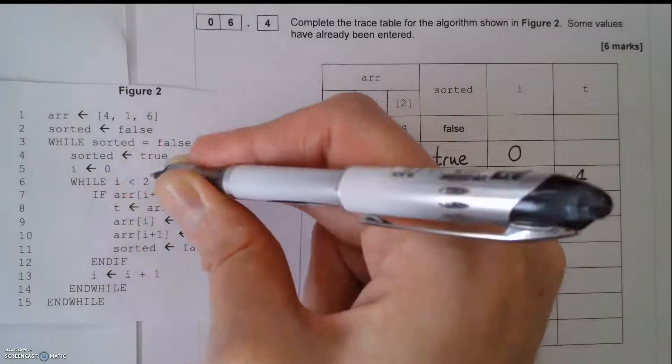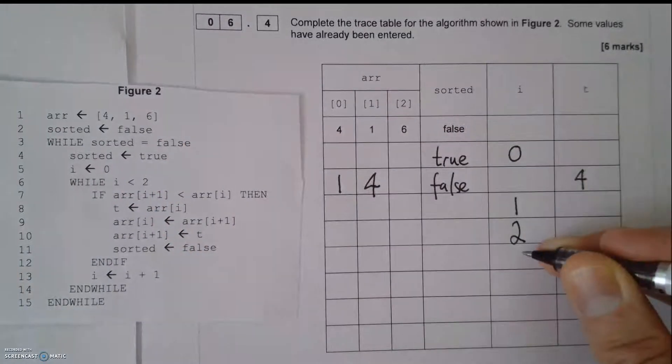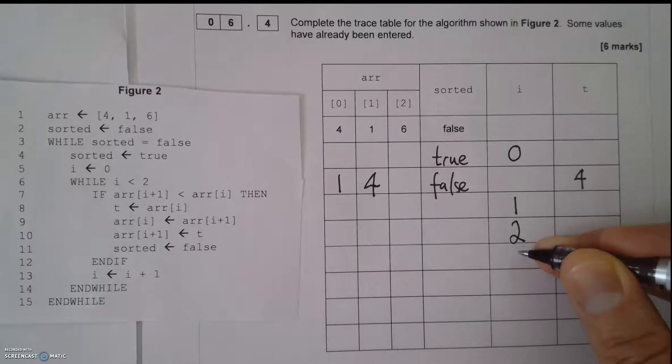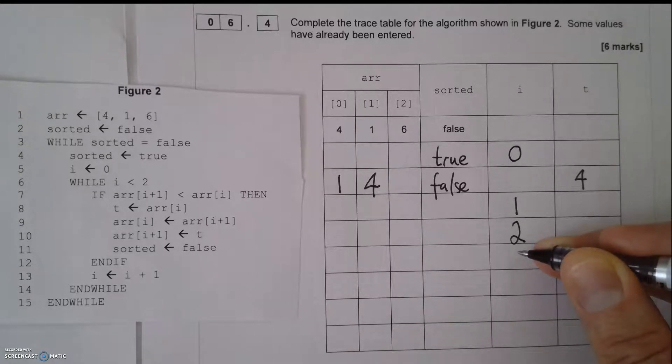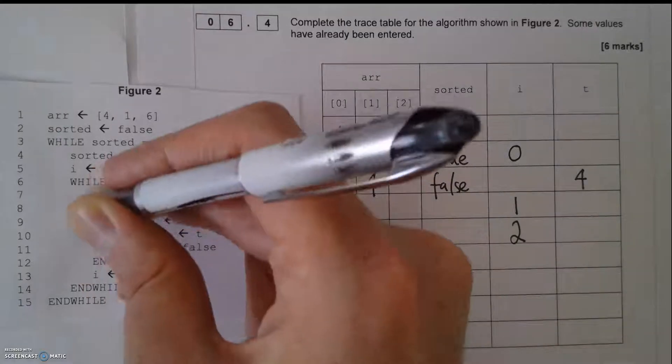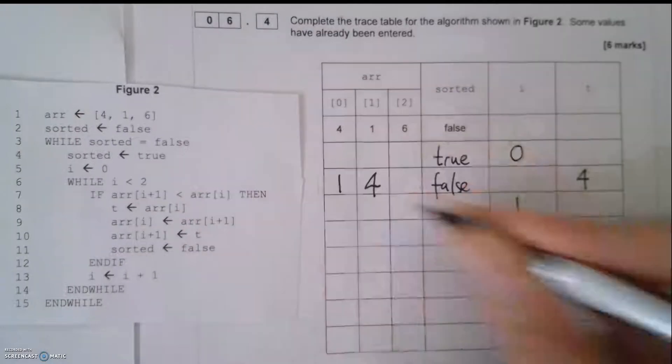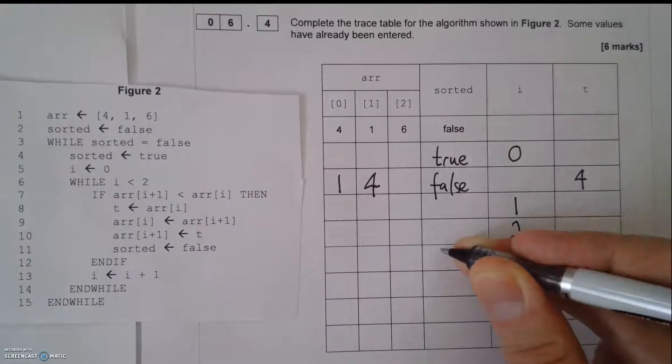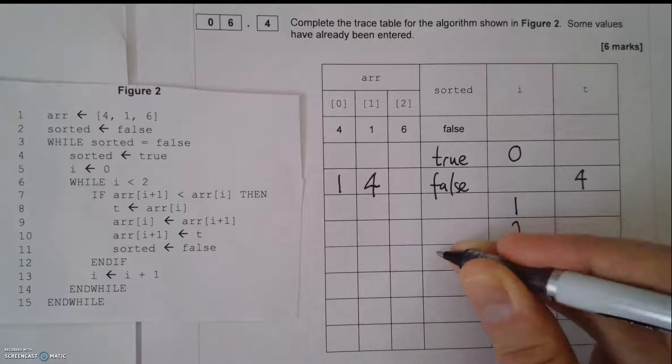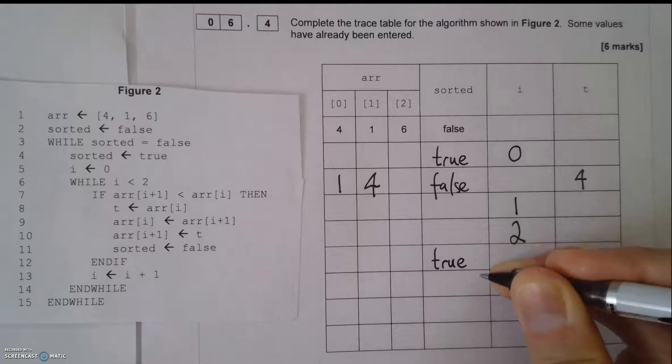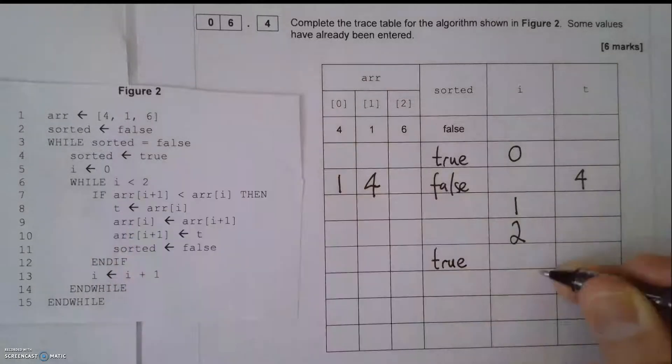Now, I'm going back to this while loop. While i is less than 2, it isn't anymore. It is 2. So that means it isn't less than 2. If that was less than or equal to 2, then I still need to do that. But now it isn't. So what I do now is I go back up to here. While sorted equals false, yes it does. Sorted equals true. So as I said before, I'll start a new line here, because I've gone to a new indentation level. Sorted equals true. i equals 0.